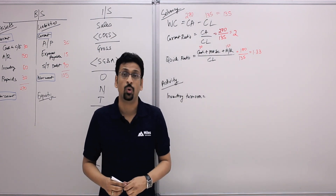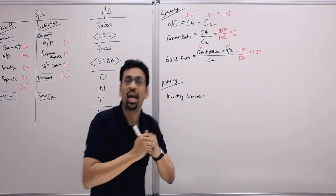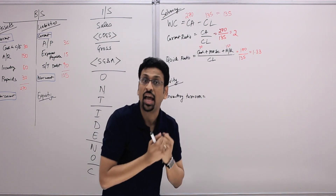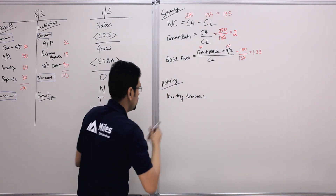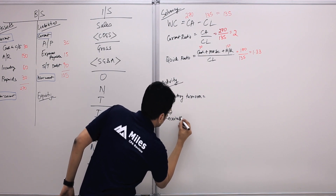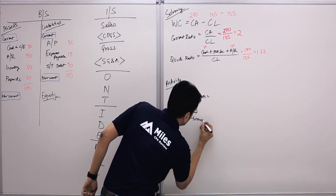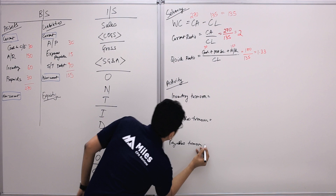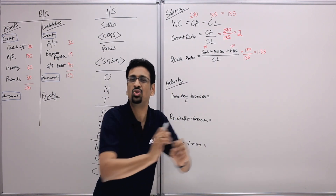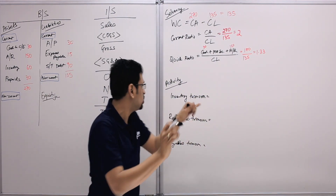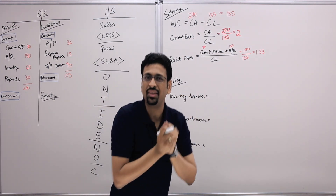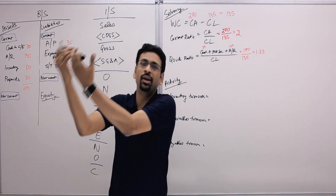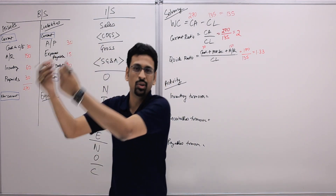Receivables turnover measures how fast the business sells goods and collects cash — sell goods, collect the cash, sell goods, collect the cash — how many times does it do that? You also want inventory and receivables turnover to be very fast. For payables turnover — buy goods from vendors, pay them the cash — you want this one to be a little slower.